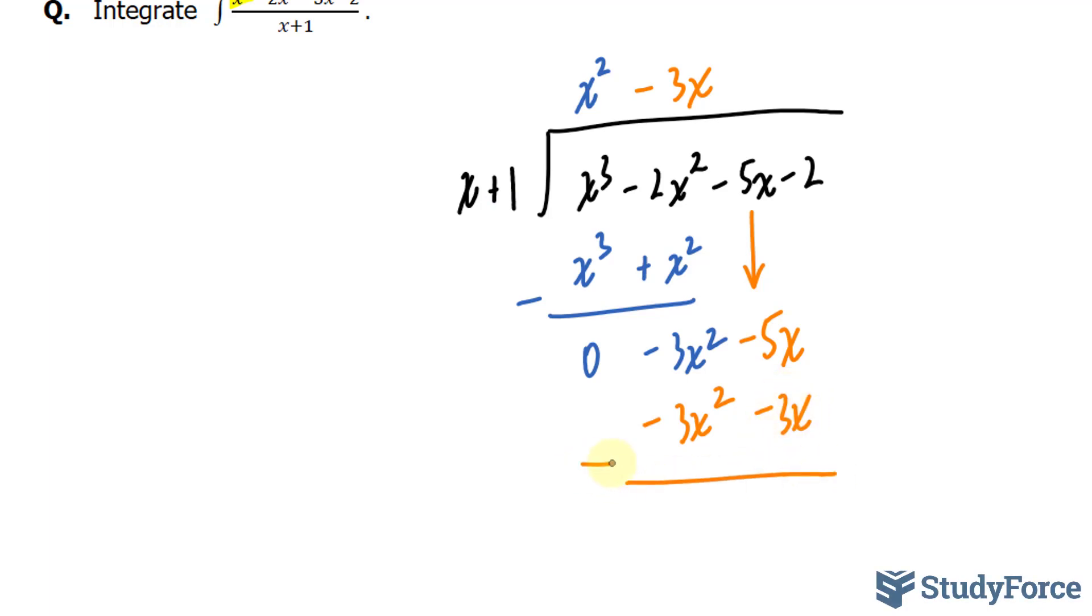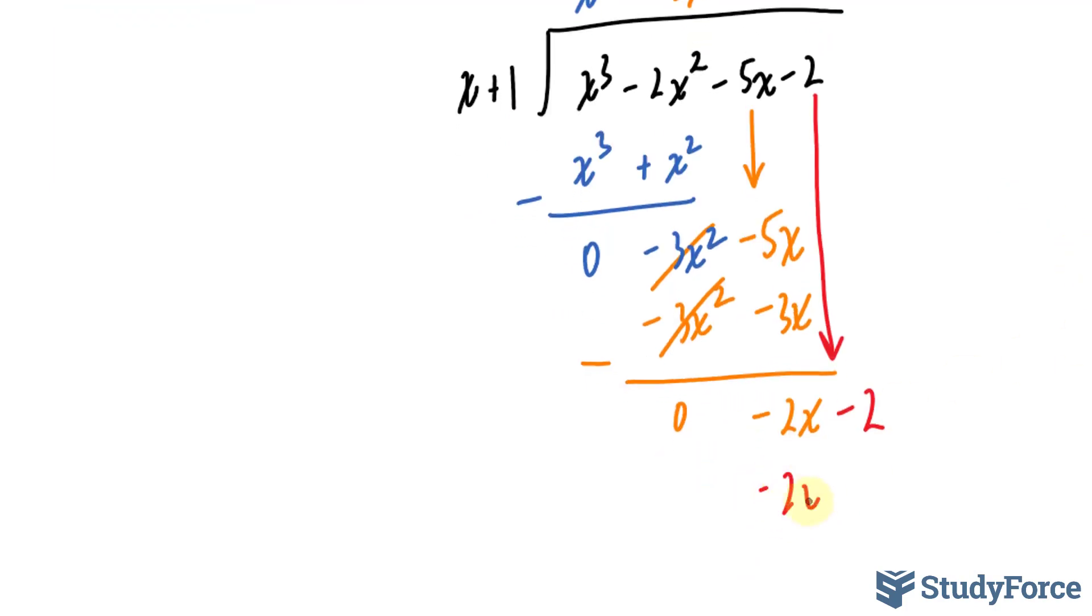Subtracting these: negative 3x squared minus minus 3x squared gives us 0. And negative 5x minus minus 3x gives us negative 2x. Lastly, I'll drop this negative 2 over here. Divide negative 2x with x. That gives us negative 2. Negative 2 times x is negative 2x.